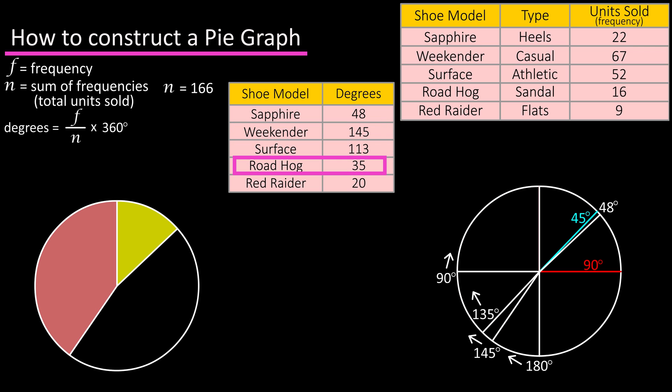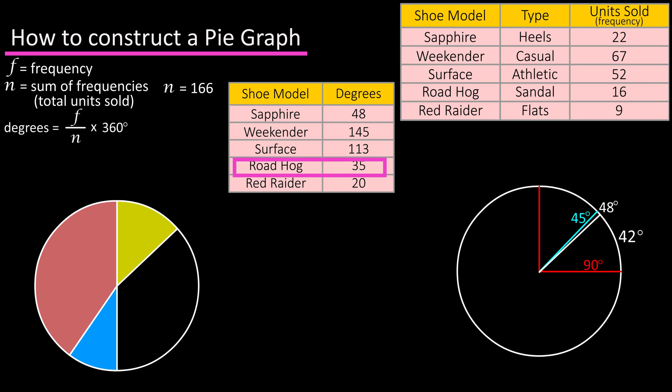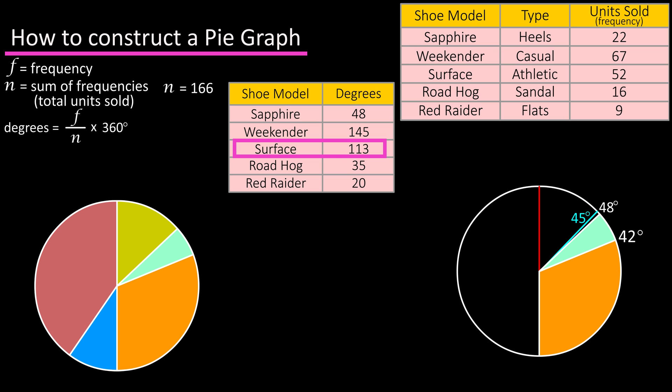And 35 degrees for the roadhog shoe will fit perfectly here, because 145 plus 35 is 180. So back up in this section of the circle, 90 degrees minus the 48 degree pie slice leaves 42 degrees here. And we have the Red Raider shoe at 20 degrees, which is a little less than half of 42. So we can sketch that in about here. And 113 degrees for our final shoe type, the surface, will go in here.